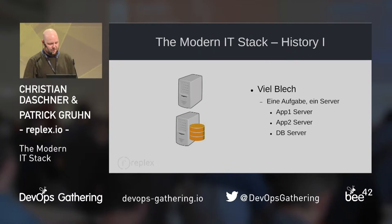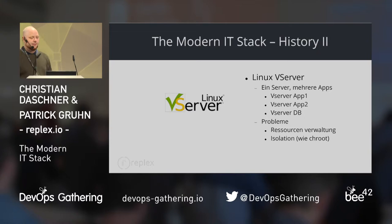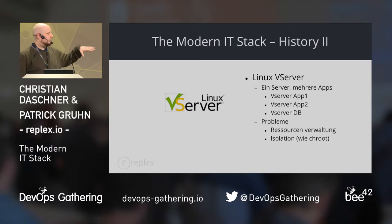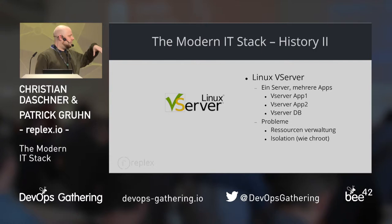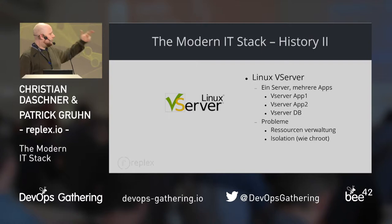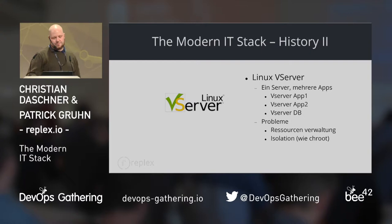A few years later we saw the Linux vServer project and played a little bit with that. It was really cool, but the problem was we had a kind of isolation like ChangeRoot but not real isolation. One process could see only itself, but it's one network for everything, the same RAM, and we had no resource management for the vServers. It was not really great, but it was the starting of all.